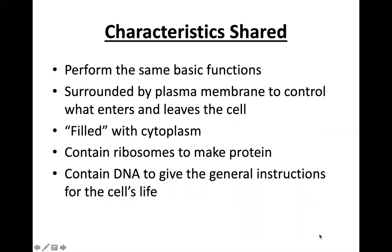These two types of cells share some common characteristics. They perform the same basic functions: they have DNA, they make protein, and they function as cells. Both are surrounded by a plasma membrane to control what enters and leaves the cell. Both are filled with cytoplasm. Both contain ribosomes to make protein, which is crucial. And both contain DNA to give the general instructions for cell life. So DNA is something in common in all cells — in all living things on Earth, they all have DNA.